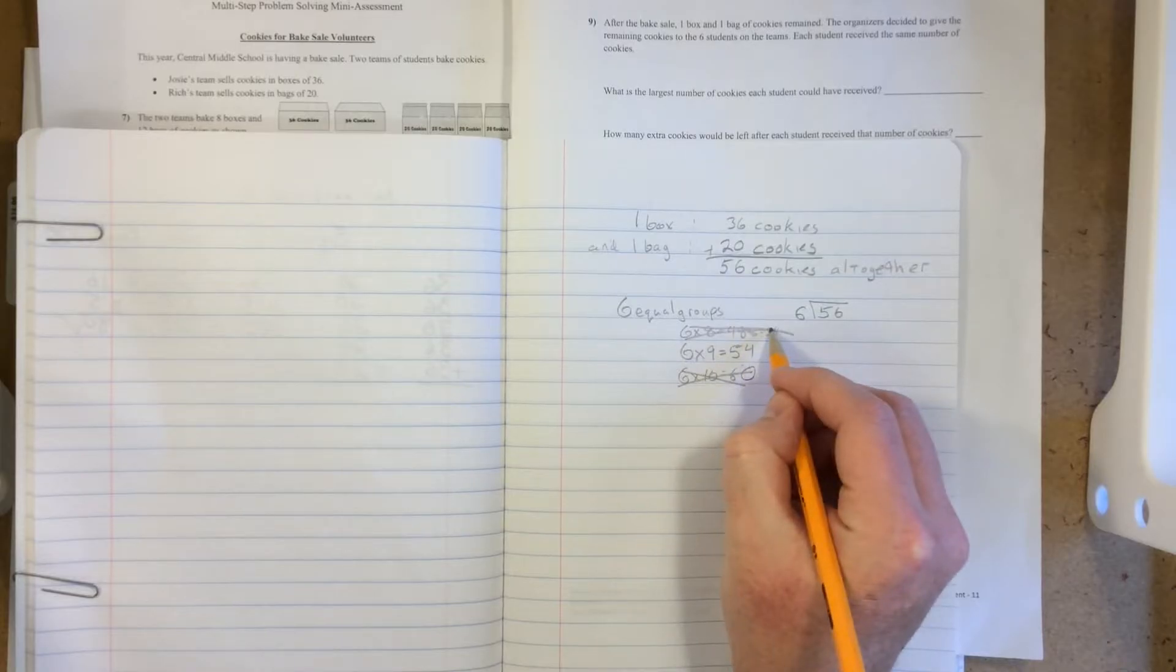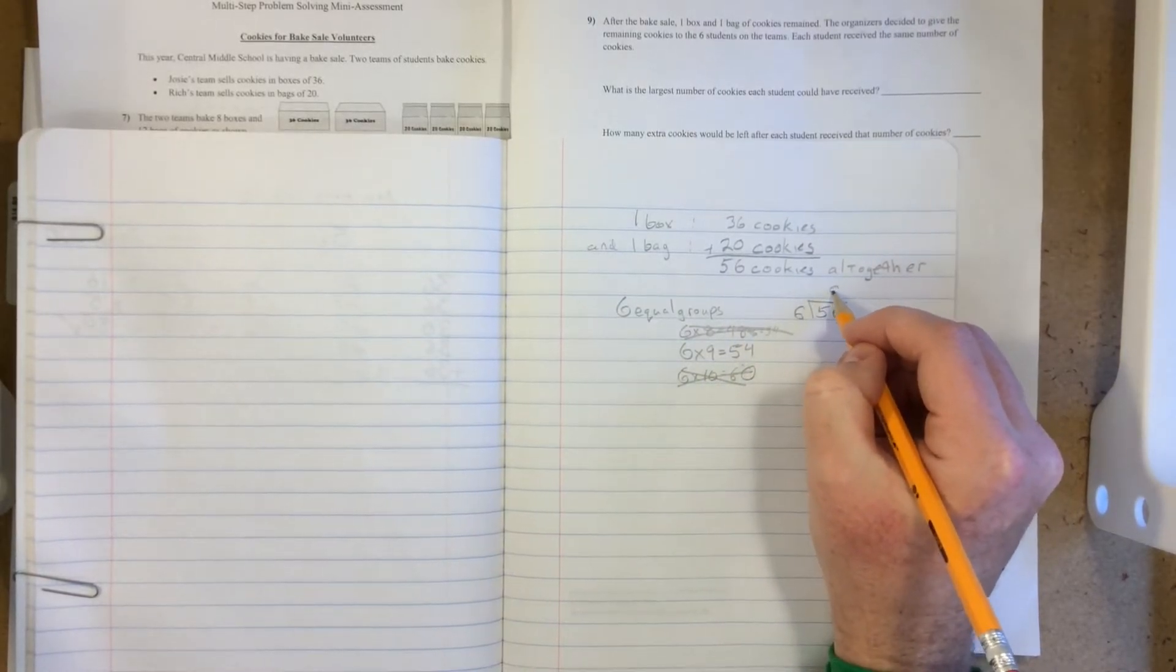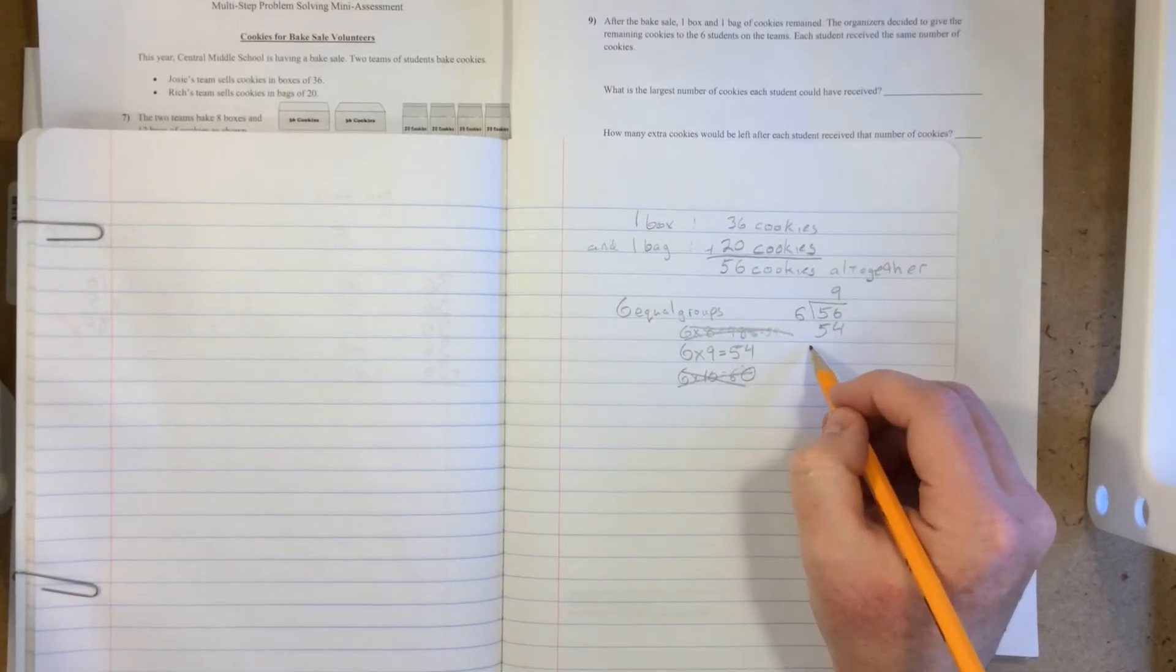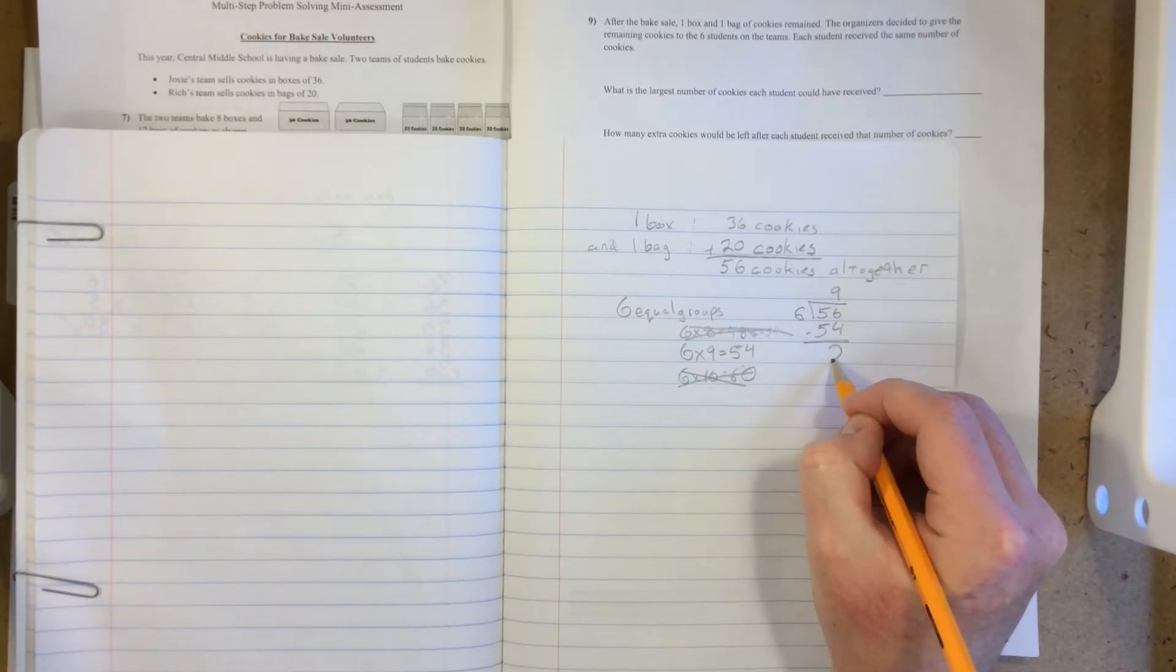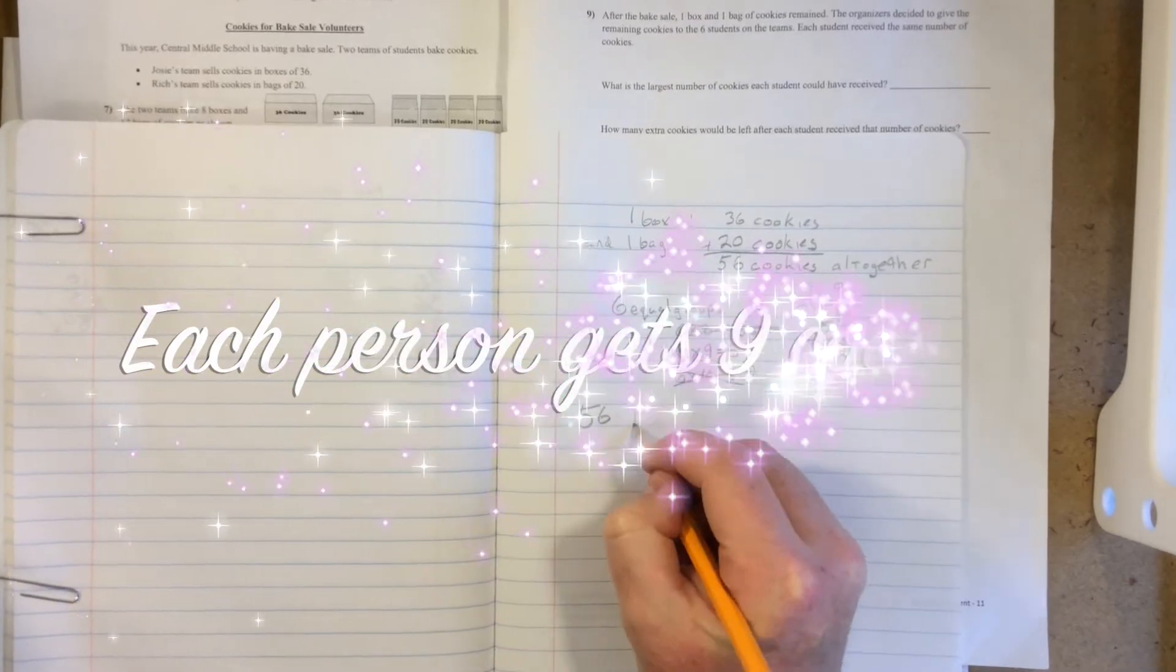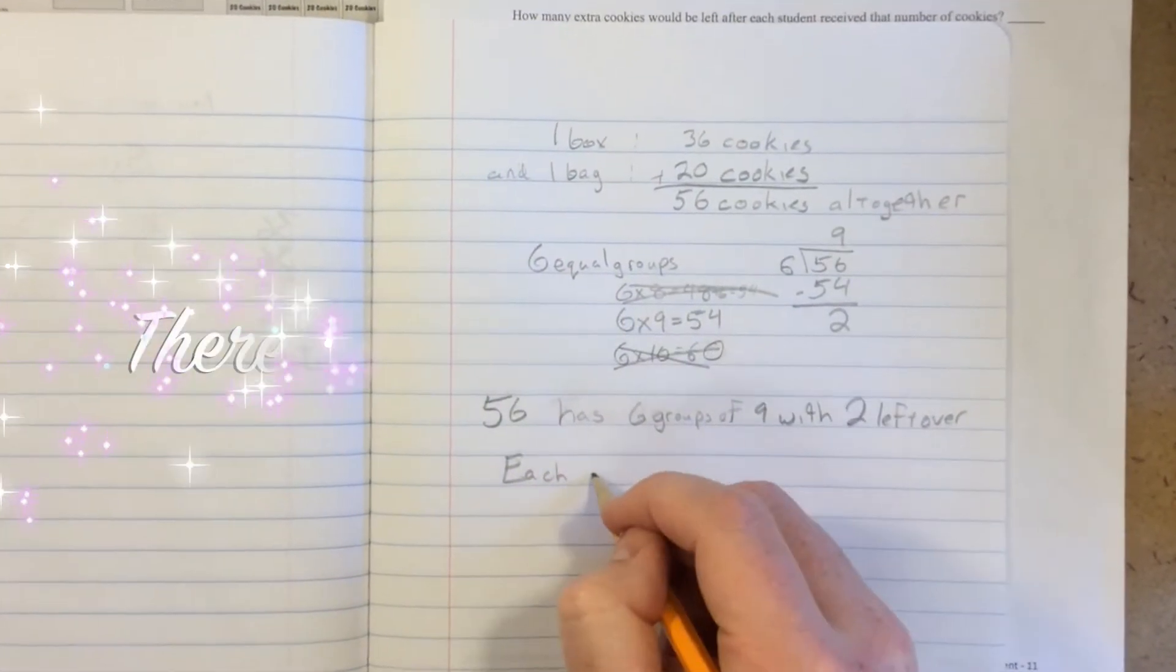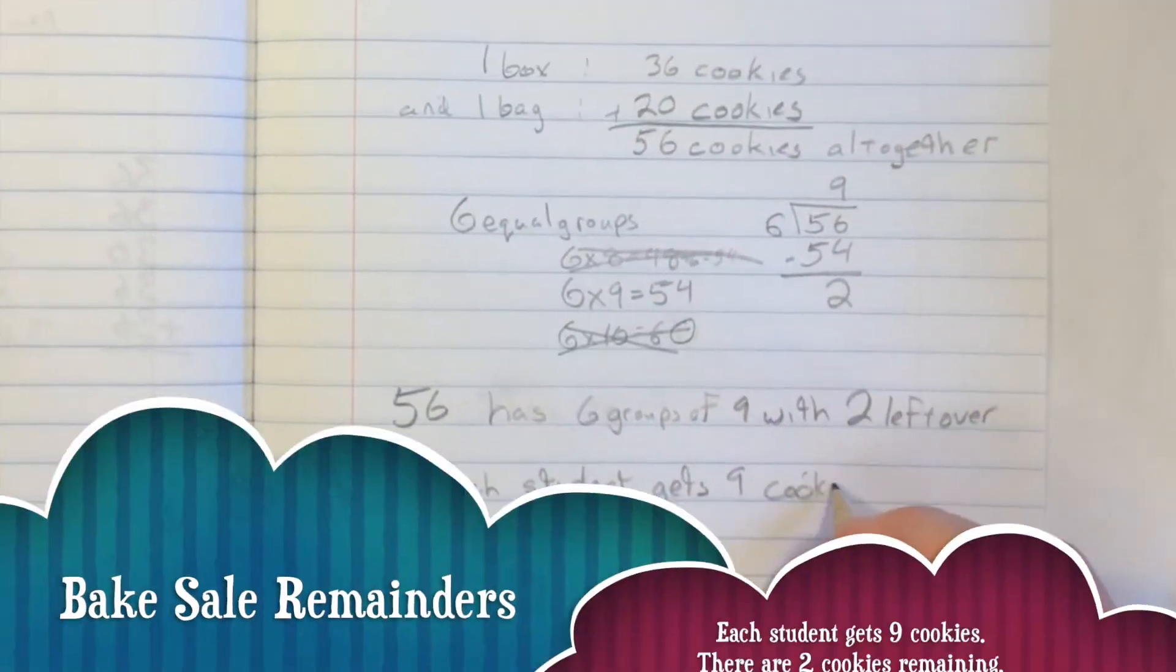So we know that 56 divided by 6 is 9. And like we know, 9 times 6 is 54, so 56 minus 54 is 2 left over. So there are 6 groups of 9 in 56 with 2 more. So that means that each student could get 9 cookies and there will be 2 remaining.